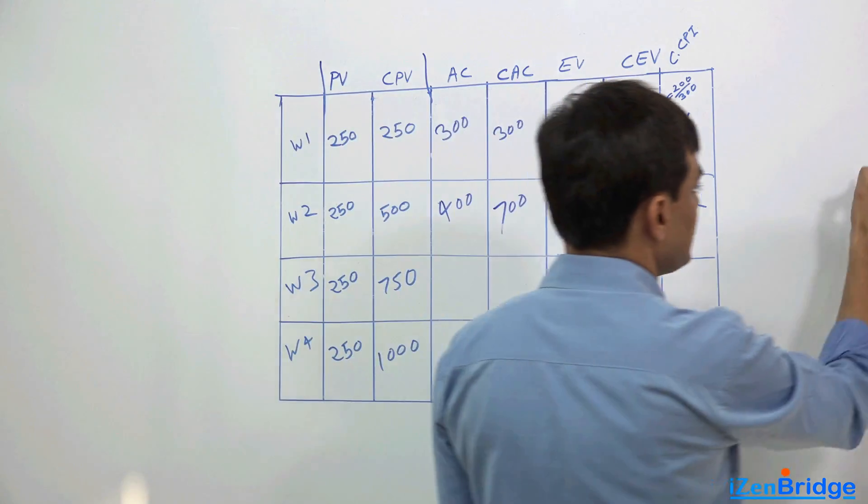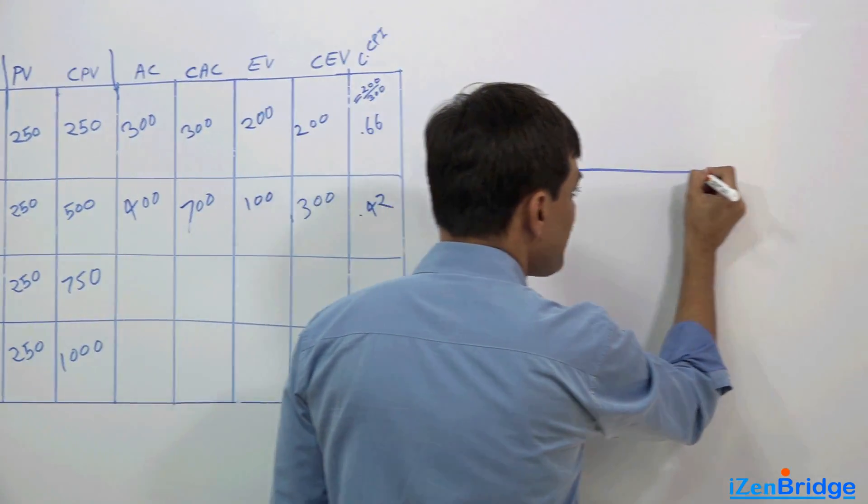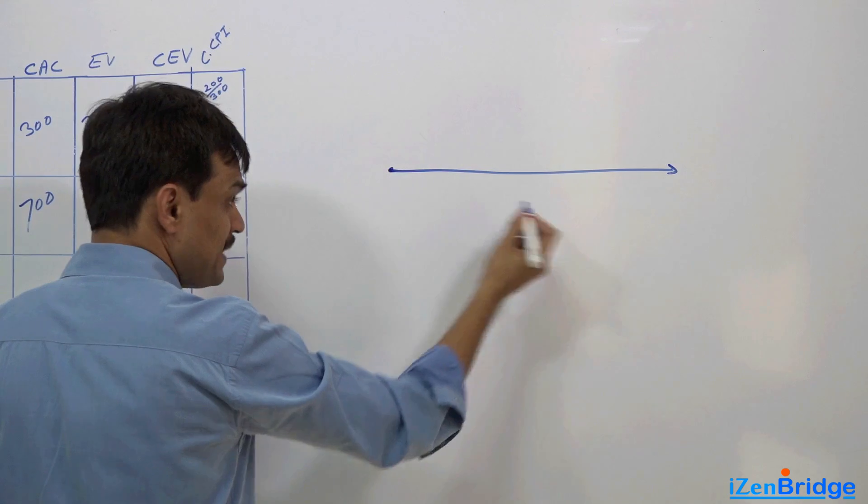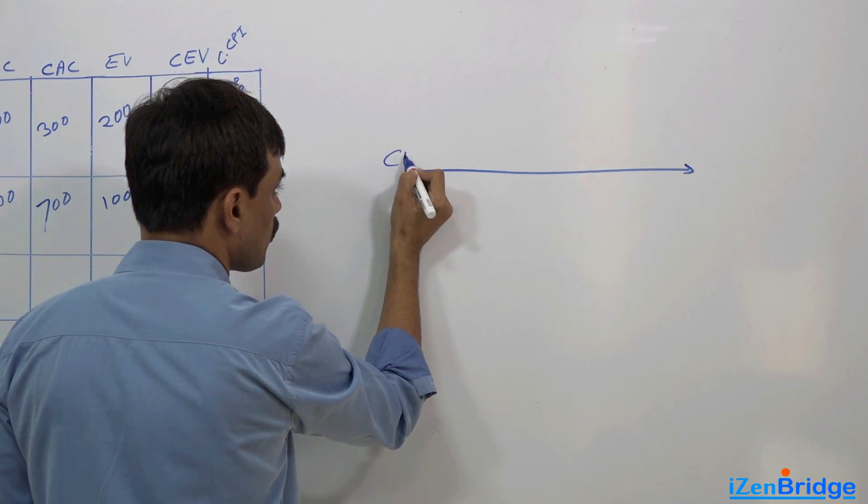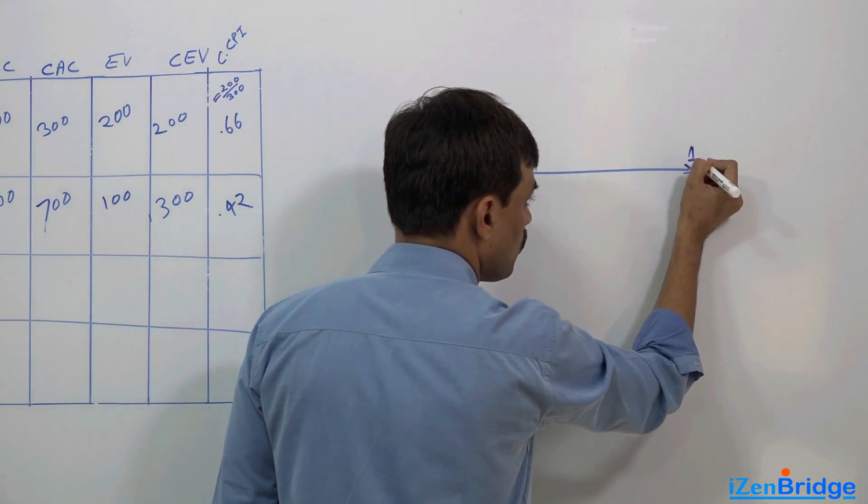If I cumulatively calculate cost performance index at the end of week 2, it comes to 0.42. Now let's look at it in a different view. As a baseline, the expected cost performance index is always 1.